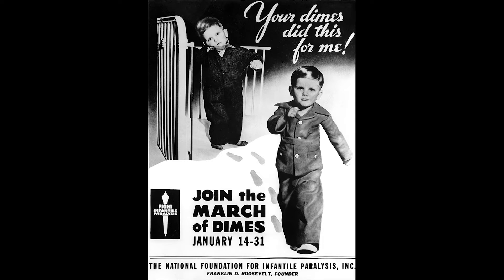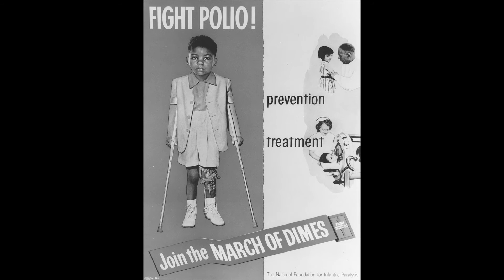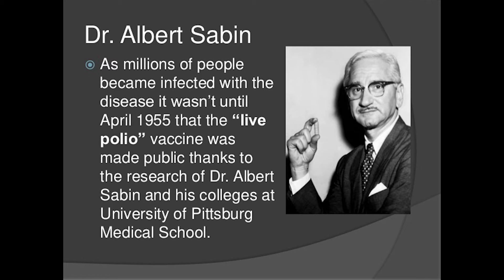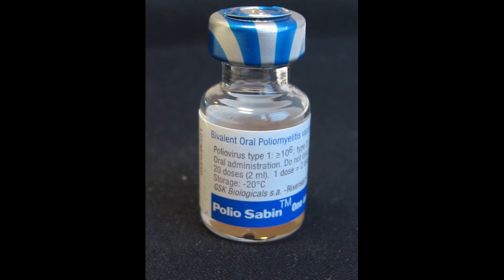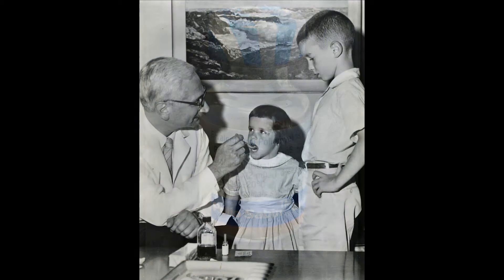Immediately following the licensing of the vaccine, mass immunizations were promoted by the March of Dimes, resulting in a dramatically reduced number of cases — from 58,000 to just 5,600 cases. A second vaccine would be developed by Albert Sabin. This vaccine would use live but weakened poliovirus and would be called the oral polio vaccine (OPV). Human trials of Sabin's vaccine began in 1957 and would prove not only more effective but also easier to administer to children.